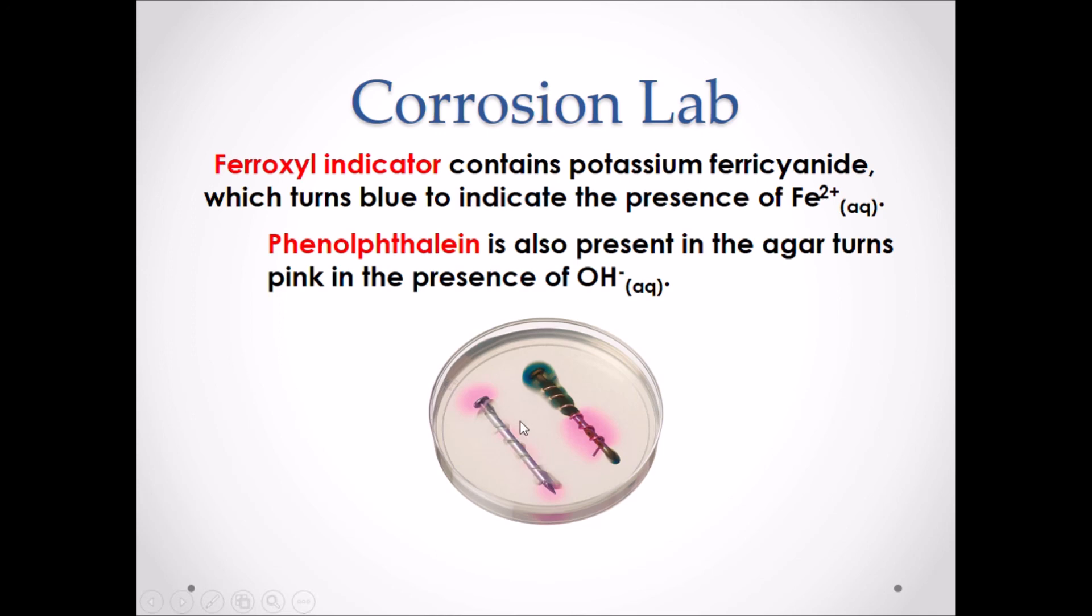If we look at our first nail, we can only see the presence of pink. That tells us that corrosion is happening because we are forming OH-. But we are not seeing a blue color. Therefore, that tells us that iron is not corroding. That the metal that is wrapped around the iron must be protecting iron. And therefore, we are witnessing the corrosion of the metal that is wrapped around iron.